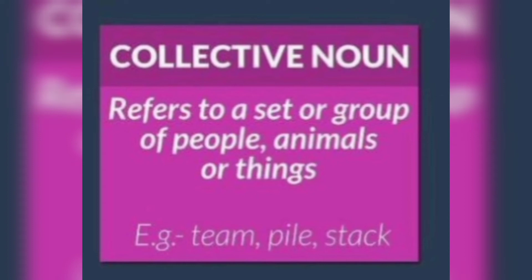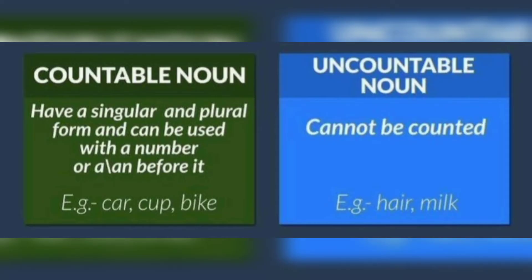A noun can be countable or uncountable. A countable noun is a noun that can be counted. Countable nouns have plurals. For example, car, cup and bike. He ate an egg for breakfast. I had two apples. In these sentences, egg and apple are countable nouns.